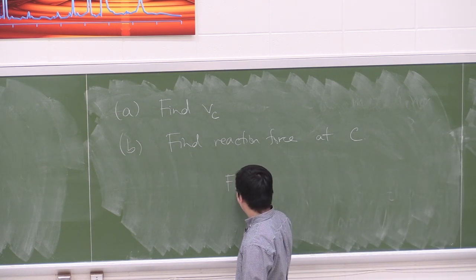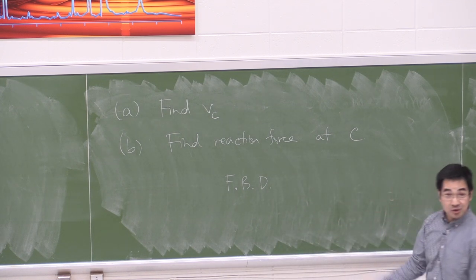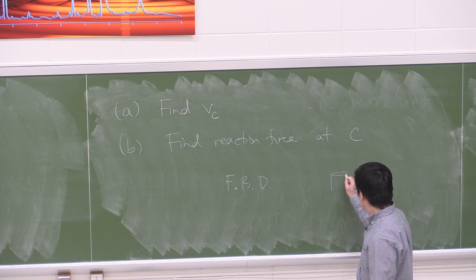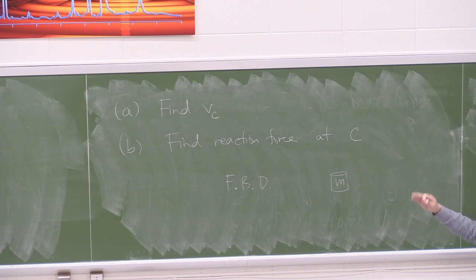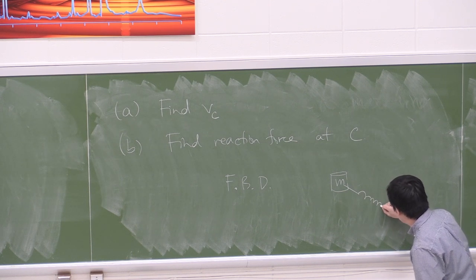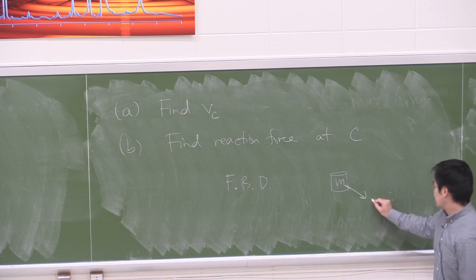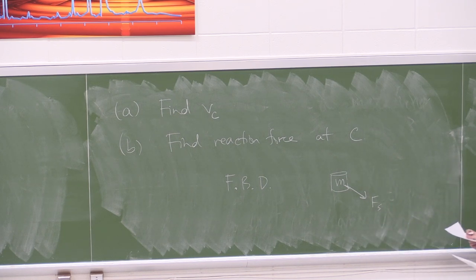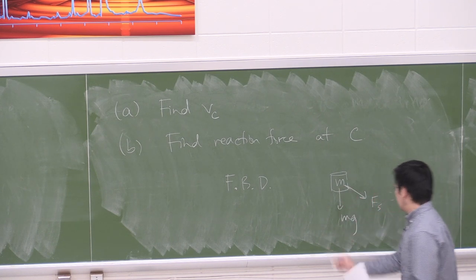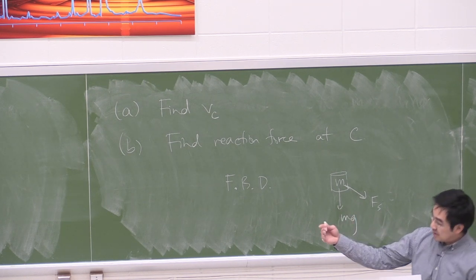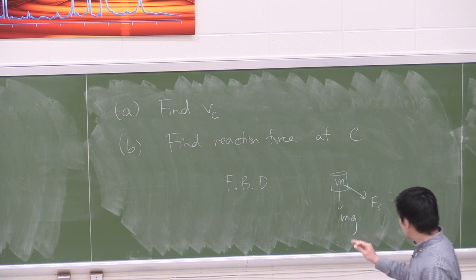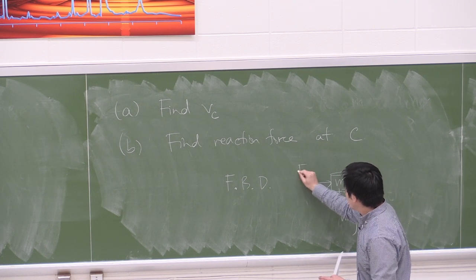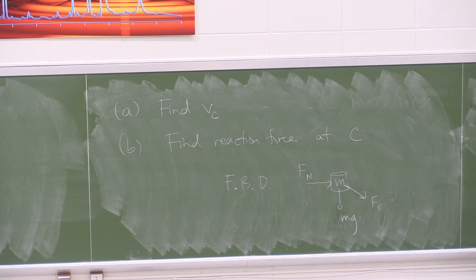We'll always start with a free body diagram. I'll focus on location C. Once the collar gets to C, the spring is at a completely different angle, so it's going to pull in a different direction — there's a spring force acting in that direction. We also have mg of the collar, and then we have this reaction force. At point C, the curved part of the path is just meeting the straight part, so there is a reaction force — I'll call it Fn, a normal force of the surface of the rod acting on the collar.